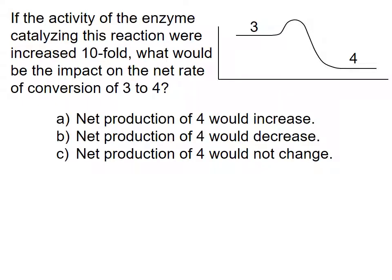Would net production of 4 increase, decrease, or stay the same? The correct answer is A. This reaction is highly energetically favorable, meaning that the forward reaction is occurring at a faster rate than the backward reaction.